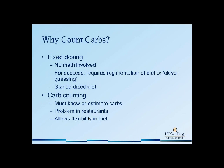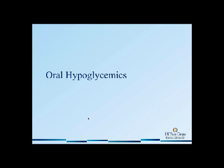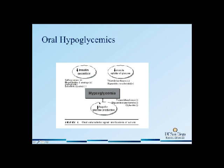Now we're going to move on to discuss oral hypoglycemics. There are different mechanisms for hyperglycemia: there may be lower insulin secretion, lower muscle uptake of glucose, and increase in hepatic glucose production. Medications are used in type 2 diabetes to target all these different mechanisms. The ones we'll be focusing on are the secretagogues, such as sulfonylureas or glyburide, and the biguanides, such as metformin.